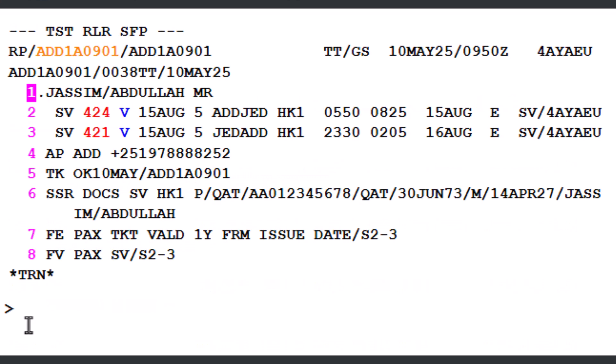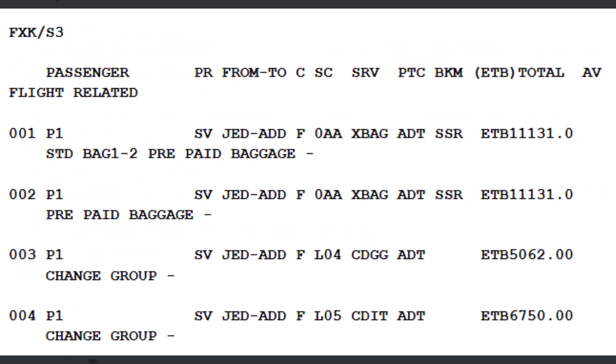To display a catalog of ancillary services for a specific air segment — for example, segment number 3 — enter the command FXK slash S3, then press Enter. This displays the catalog of available services for that segment, showing a price of 11,131 Ethiopian Birr for air segment 3 only.